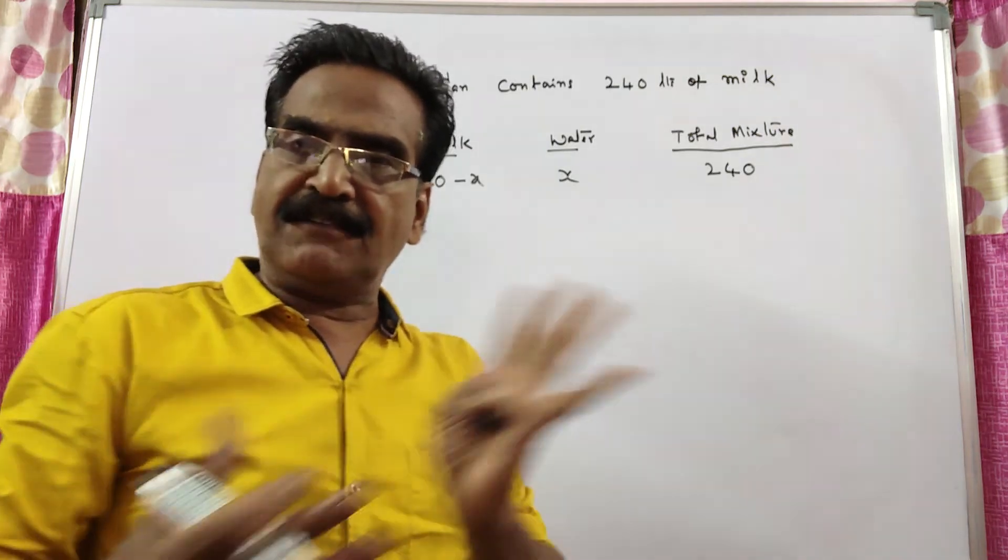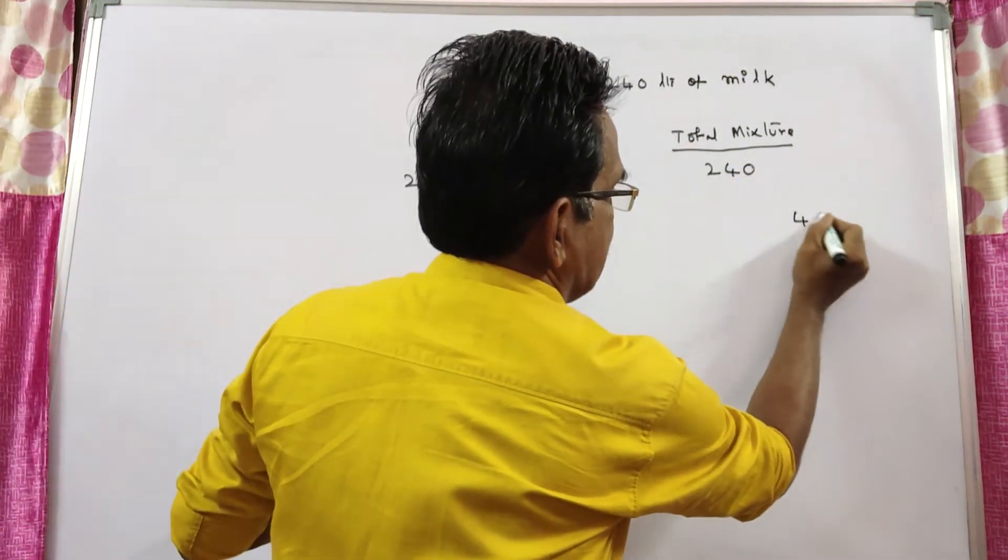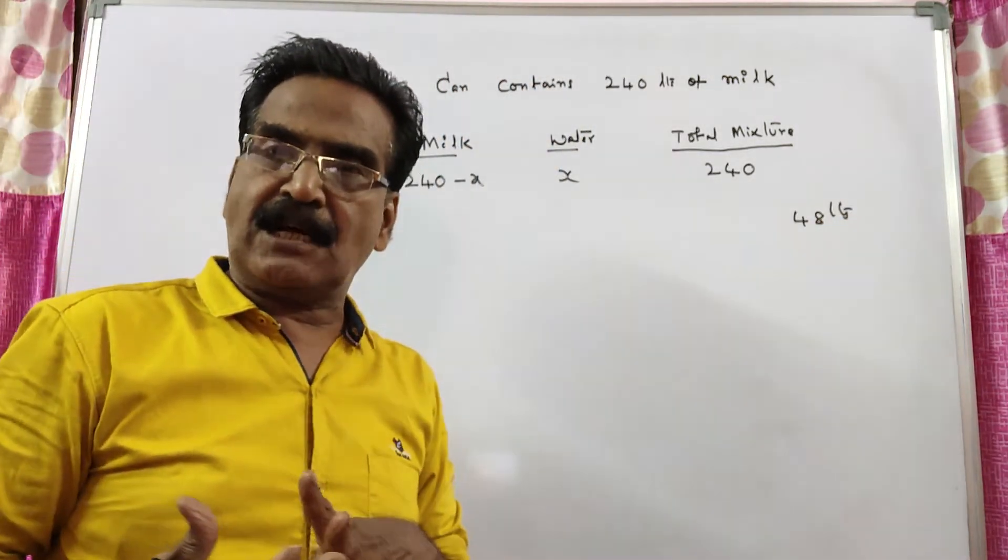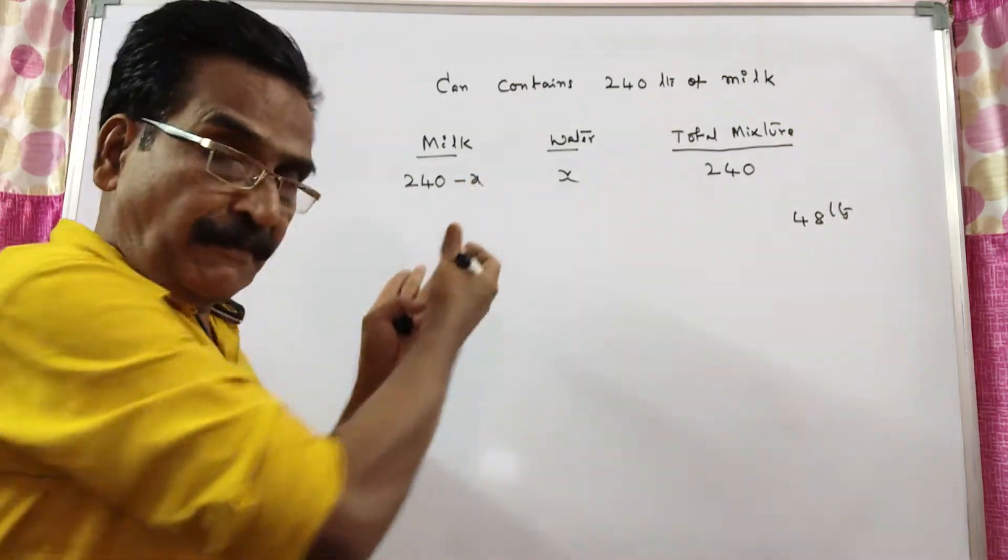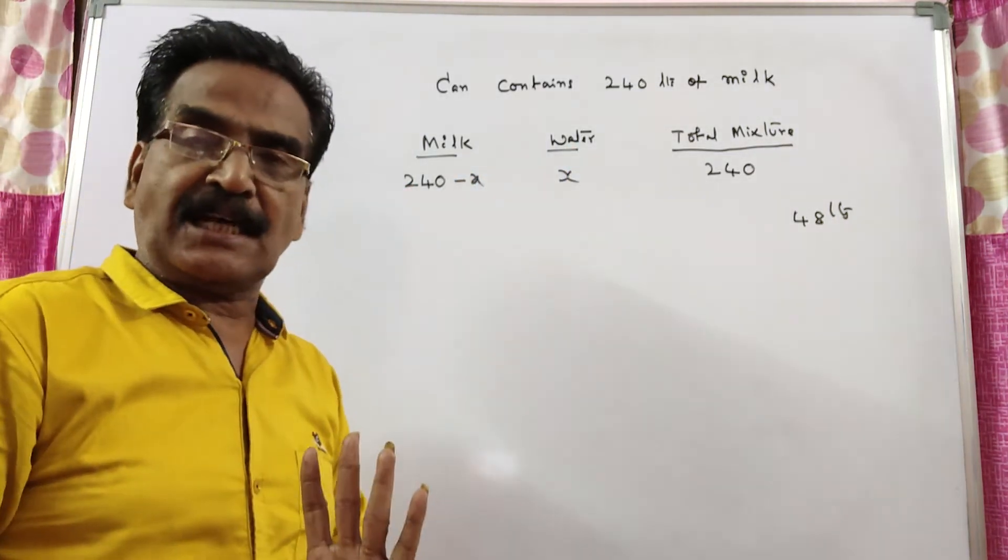Now 20% of the mixture is drawn out. 20% of 240 means 48 liters. 48 liters mixture is drawn out. Friends, if 20 liters of mixture is drawn out, 20 liters of milk comes out and 20 liters of water is drawn out.